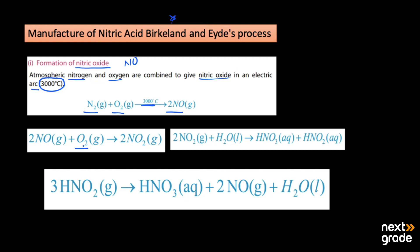In the second step, the nitrogen oxide reacts with oxygen. The temperature here is 600 degrees Celsius, and it forms nitrogen dioxide (NO2). In the third step, nitrogen dioxide absorbs water and produces dilute nitric acid (HNO3) along with nitrous acid (HNO2).